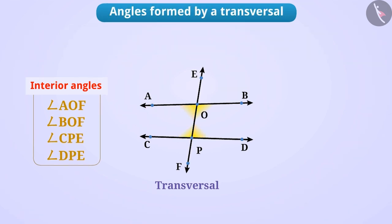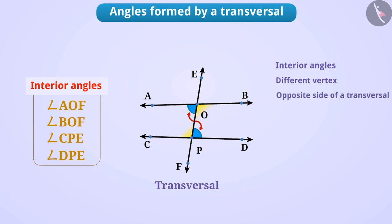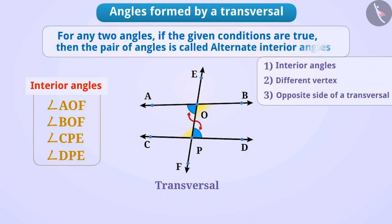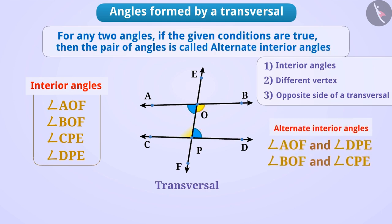Now, let us consider a pair of interior angles — angle AOF and angle DPE. We have seen that they are interior angles. We can also see that their vertices are different, and they are on the opposite sides of the transversal. For any two angles, if these conditions are true, then the pair is called alternate interior angles. Similarly, angle BOF and angle CPE are another pair of alternate interior angles.